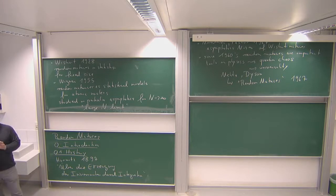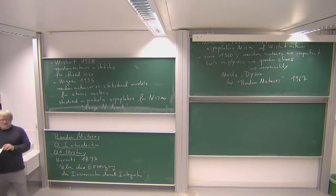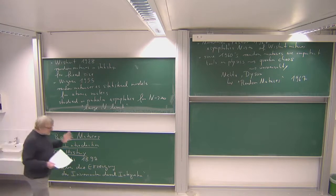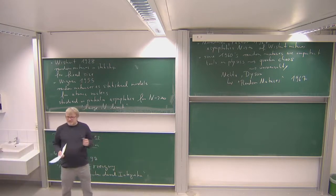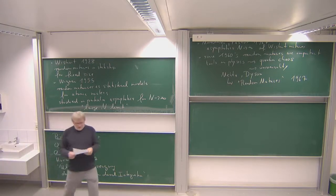In mathematics at this time more or less nobody knew about random matrices; it was not really a topic. But then in the 70s it slowly moved into mathematics, in particular because it was observed that random matrices seem to have something to do with the Riemann zeta function — and of course if something has anything to do with the Riemann zeta function, mathematicians are interested.